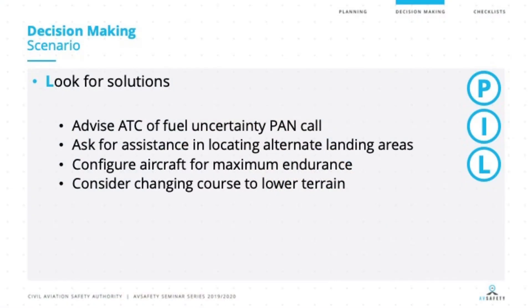Moving to L in the PILOT model — looking for solutions. There are many solutions available, but we've chosen a select few as examples. One is to advise ATC of their fuel situation; while they made a PAN call, under current rules that would be a MAYDAY call — the earlier the call is made, the sooner ATC can provide assistance such as track shortening or priority. Other options include asking for assistance in locating alternate landing areas, configuring the aircraft for maximum range, and considering a change of course due to lower terrain. We then pick one of those solutions and Operate — putting it into action.